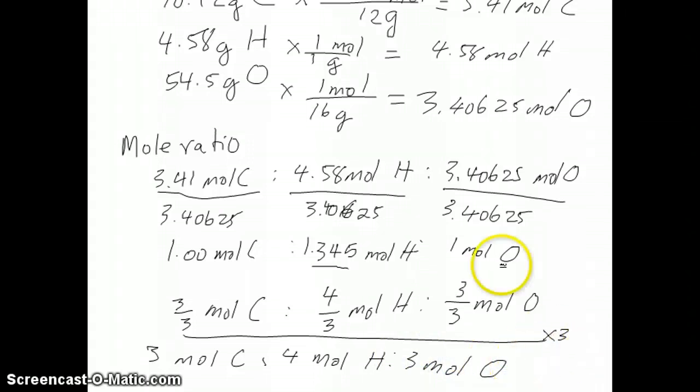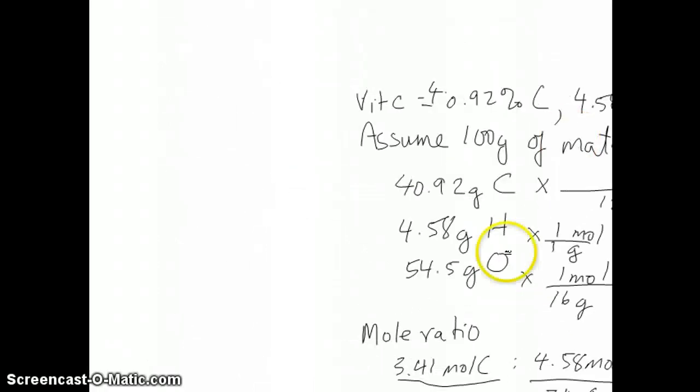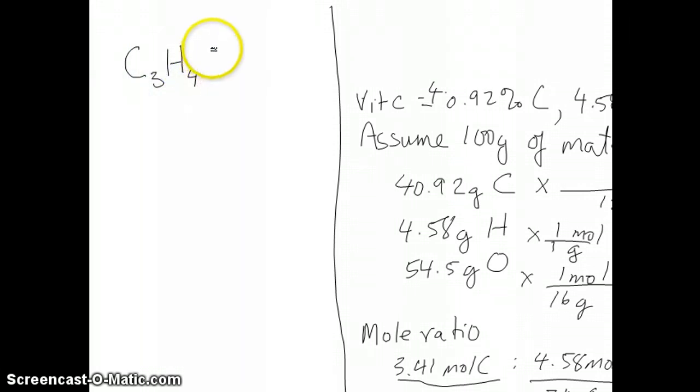And that's really your empirical formula. You can write this as follows. We were figuring out that it's 3 moles of carbon, 4 moles of hydrogen, and 3 moles of oxygen. So then the formula itself will just be C3H4O3.